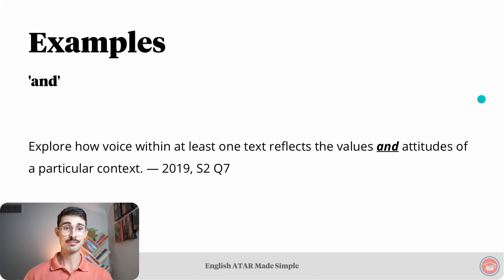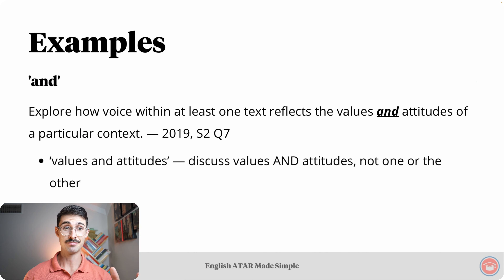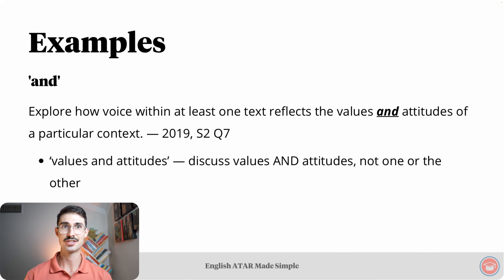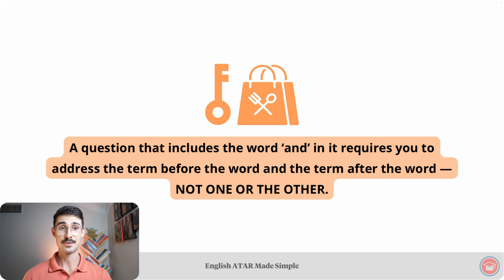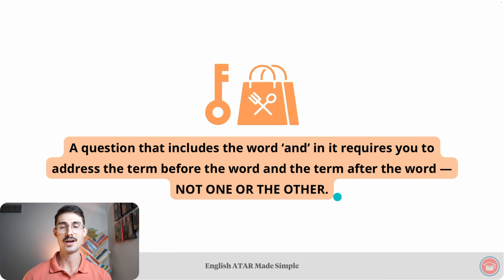Another example: 'Explore how voice within at least one text reflects the values and attitudes of a particular context.' Here, 'values and attitudes' means you must discuss values and attitudes — not just values or attitudes. Key takeaway: a question that includes the word 'and' requires you to address the term before the word 'and' and the term after the word — not one or the other.